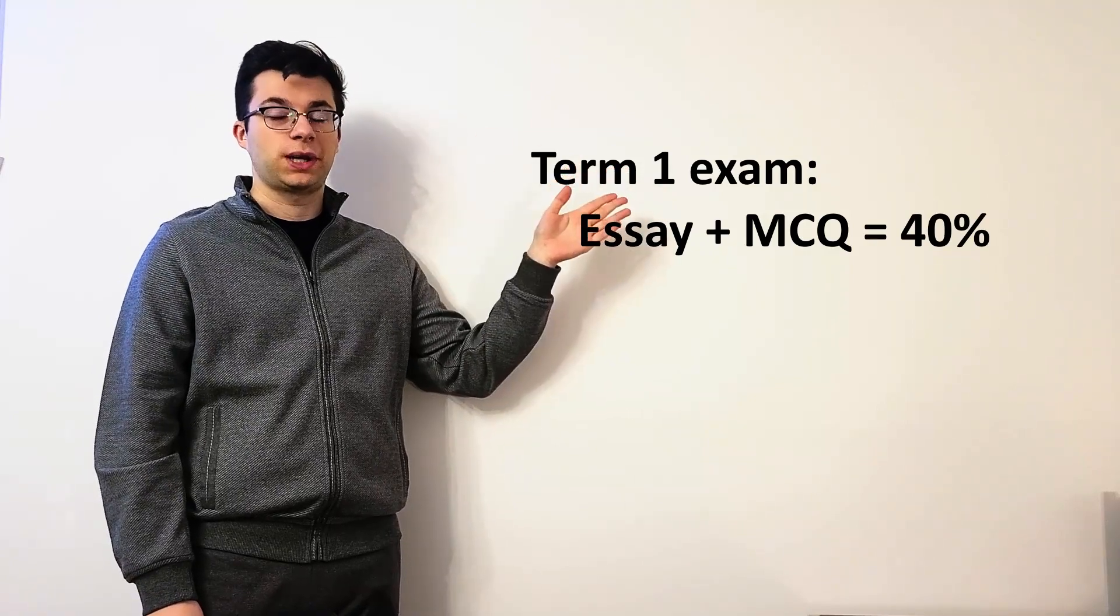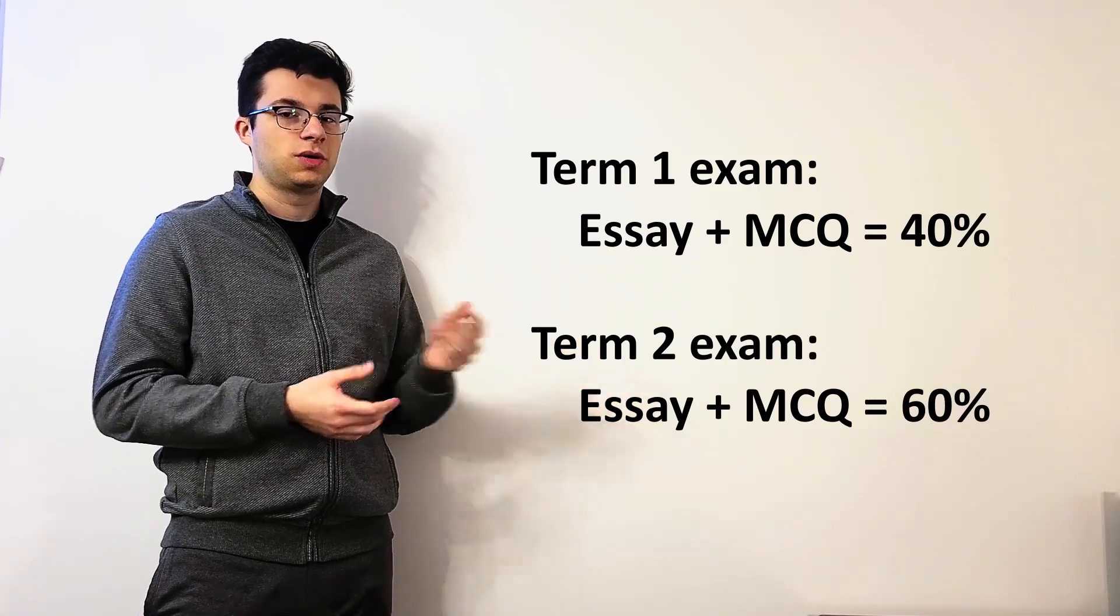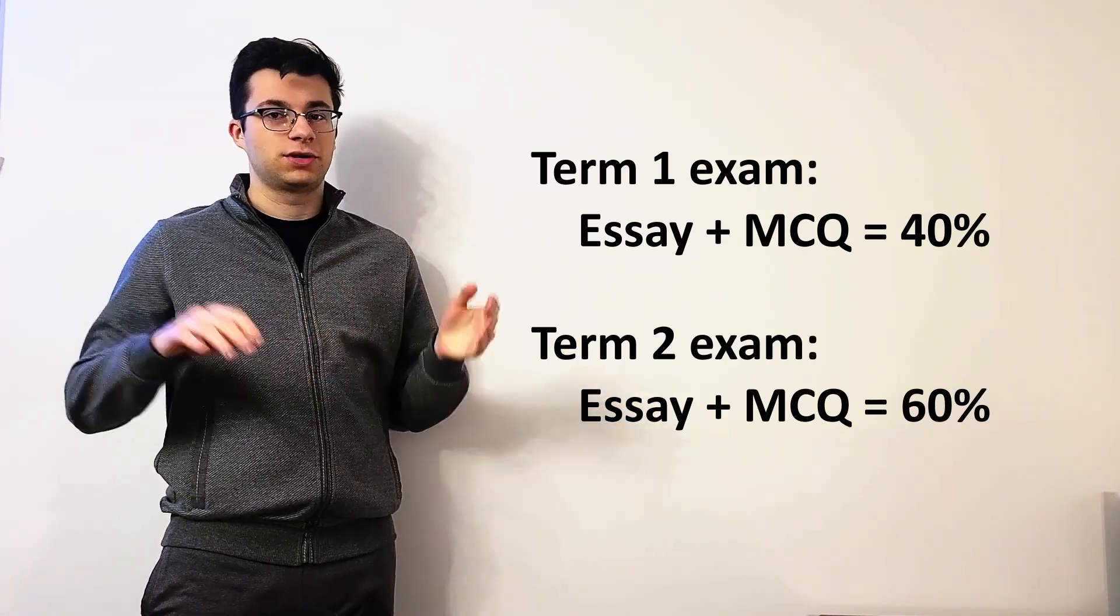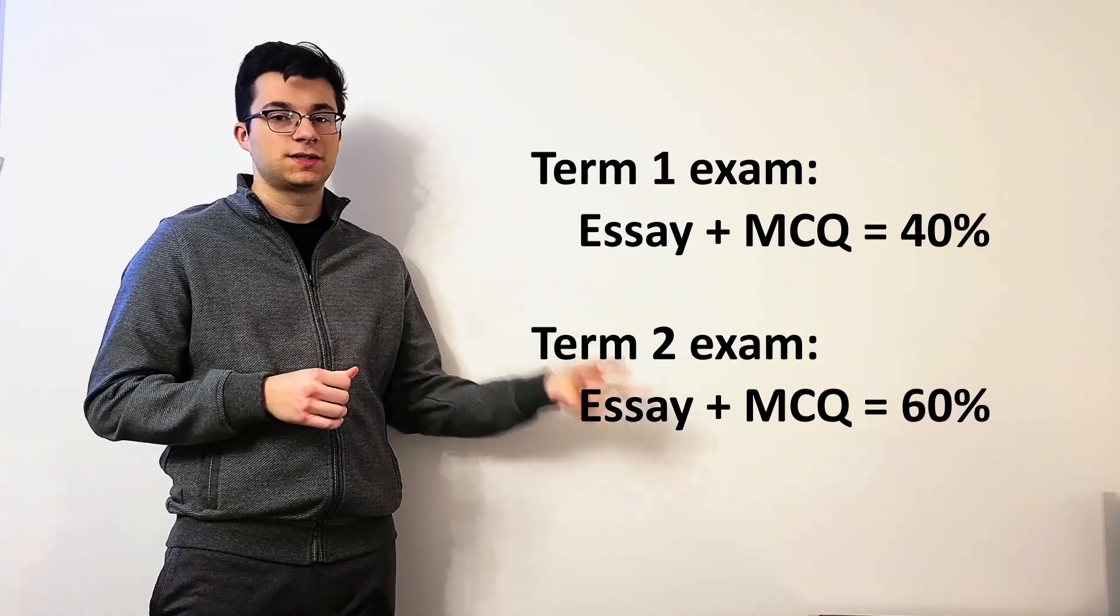Alright, so let's start off with biochemistry because that's just the easiest one to explain. So we have two papers, two big exams in this course. The first one, which I did two days ago, is worth 40% of my grade. It is about my whole first semester. And then the second one, which is worth 60%, and that's for the second term. The second one is probably going to be in May or beginning of June if the semester gets extended.